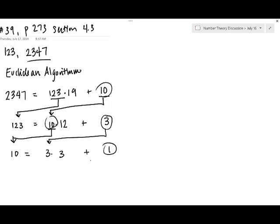3 plus 1. We hit 1. We're probably done, but just take it all the way just to make sure you've done the process correctly. Divisor becomes dividend, remainder becomes divisor, 0. So we get a 0 remainder, we know we can stop. This tells me that the GCD of 123 and 2347 is 1.